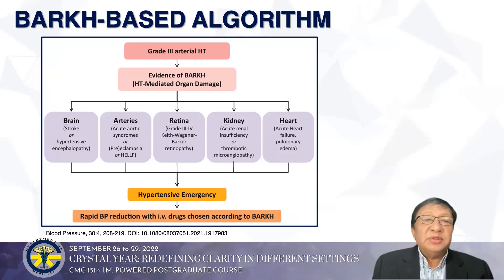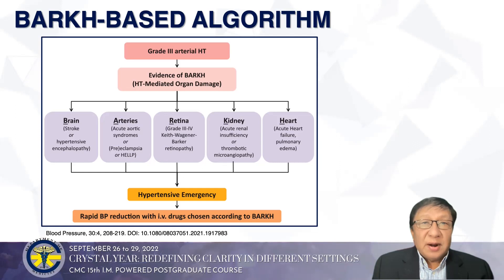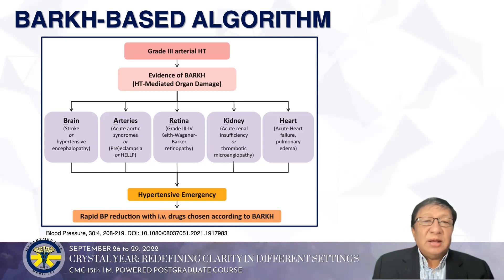You have your acute aortic syndrome, preeclampsia, or HELLP in the arteries. You can have grade 3 and 4 retinopathy with the retina, acute renal insufficiency or thrombotic microangiopathy for the kidneys, and acute heart failure and pulmonary edema for the heart. This leads to hypertensive emergency, where rapid blood pressure reduction with IV drugs chosen according to BARC is required.